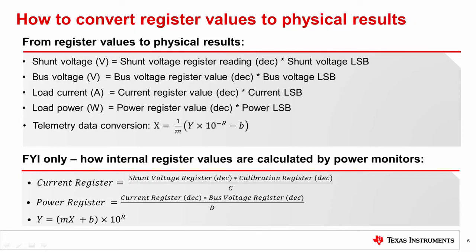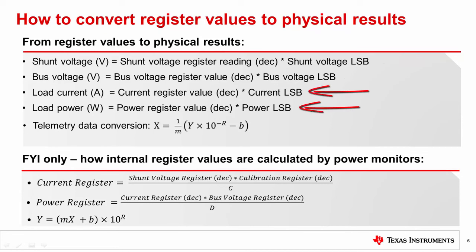Once the calibration register is successfully written, the current and power registers can be read after conversion. Shunt and bus voltage registers have fixed LSBs. Once the registers are read, the adjusted decimal values of the readings multiplied by their LSBs will produce the real voltages measured. When reading from the current and power registers, use the computed current and power LSBs per our discussion on the previous slide to get readings in amperes and watts, respectively.